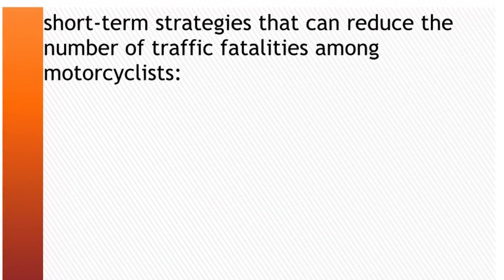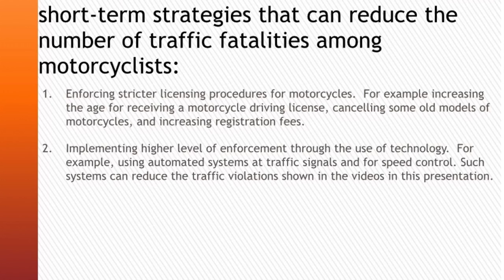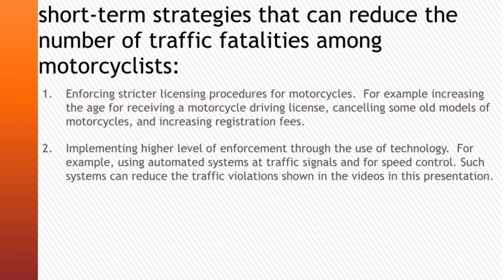The following are some short-term strategies that can reduce the number of traffic fatalities among motorcyclists: enforcing a stricter licensing procedure for motorcycles, such as increasing the minimum age for a motorcycle driving license, cancelling some old motorcycle models, and increasing registration fees. Implementing higher levels of enforcement through technology, such as automated systems at traffic signals and for speed control, can reduce traffic violations. Tougher penalties for traffic violations, especially for motorcyclists, are also recommended.